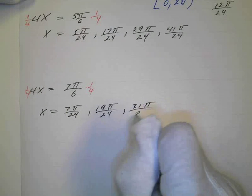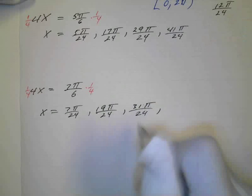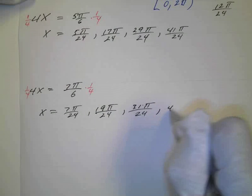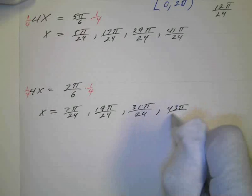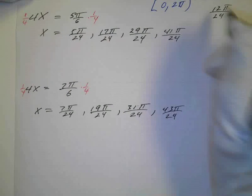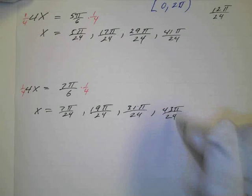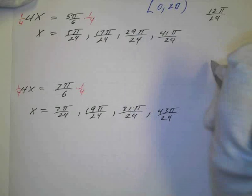And if I add another one, that's going to be 33, 43π over 24. And then if I add one more, I'm going to be 55. So I'm going to be past the 48.